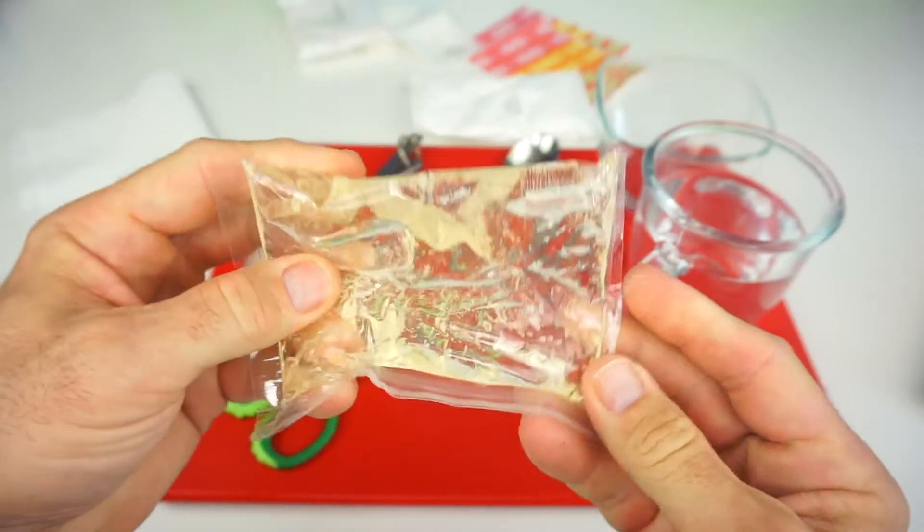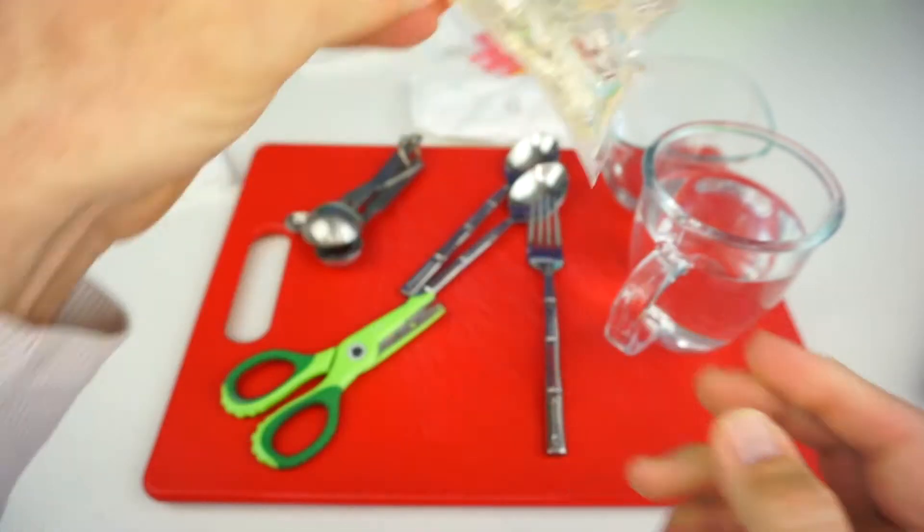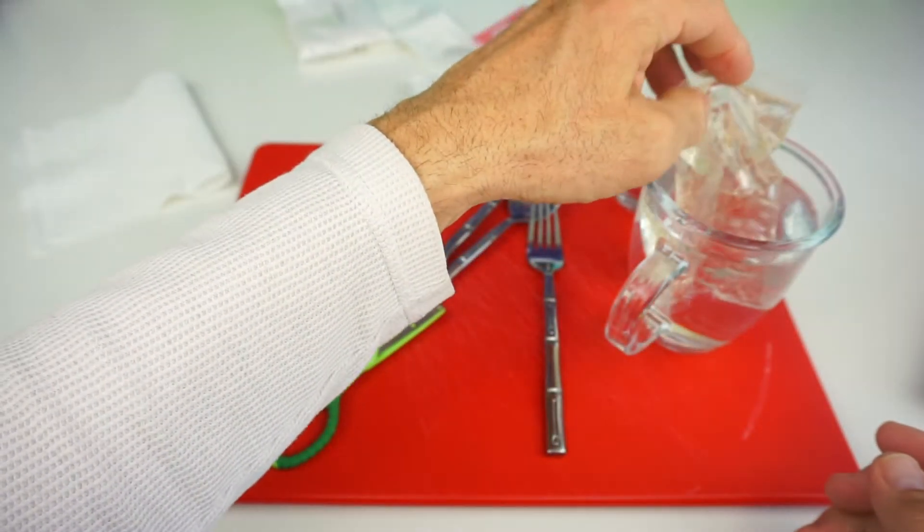The first thing we need to do is warm up and get our corn syrup nice and soft. So we're going to dip it and let it sit in some warm water.